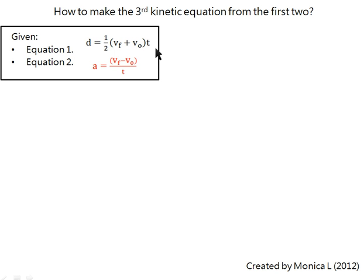The first equation is, distance is equal to half of final velocity plus initial velocity times time. The second equation is, acceleration is equal to final velocity minus initial velocity over time.